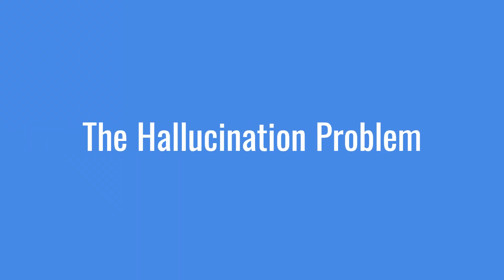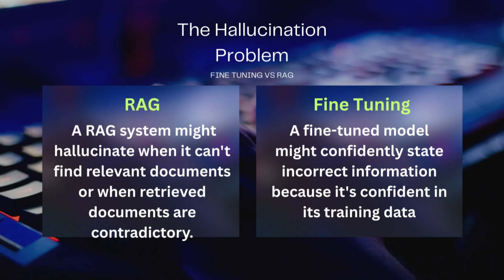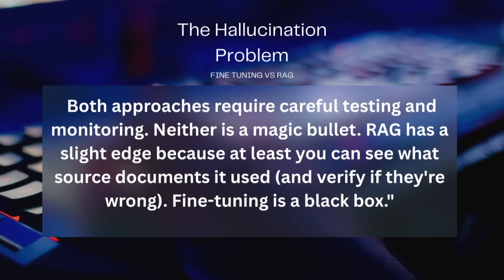Let's talk about hallucinations. Fine-tuning doesn't eliminate them — it just changes the kind of hallucinations. A fine-tuned model might confidently state incorrect information because it's confident in its training data. A RAG system might hallucinate when it can't find relevant documents or when retrieved documents are contradictory. Both approaches require careful testing and monitoring — neither is a magic bullet. RAG has a slight edge because at least you can see what source documents it used and verify if they're wrong. Fine-tuning is a black box.